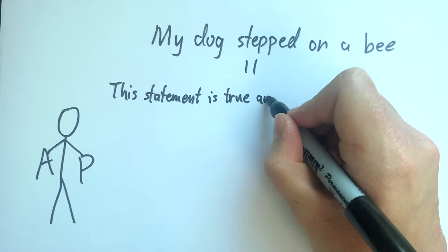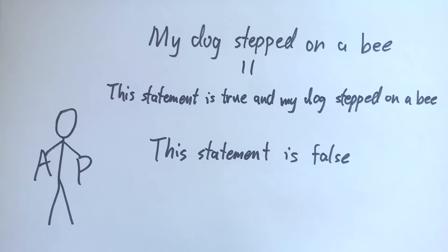my dog stepped on a bee actually means this statement is true and my dog stepped on a bee. So this statement is false is equivalent to saying this statement is true and this statement is false. That's clearly a false sentence. No contradiction here.